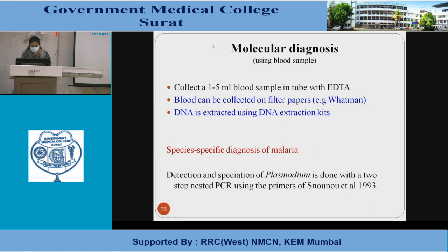For molecular diagnosis using blood samples, collect 1 to 5 ml of blood in a tube with EDTA, or blood can be collected on filter papers such as Whatman's. DNA is extracted using a DNA extraction kit. Species-specific diagnosis of malaria, including detection and speciation of Plasmodium, is done with a two-step nested PCR using specific primers.